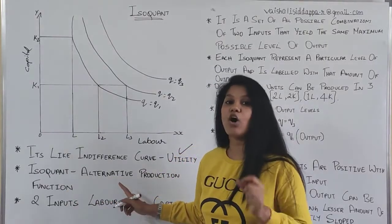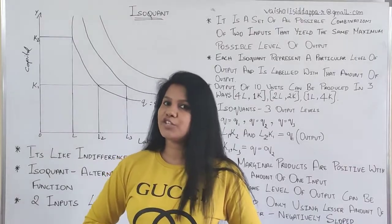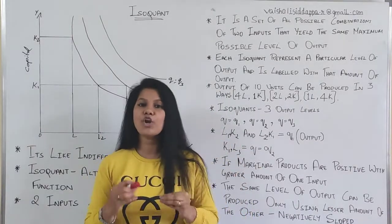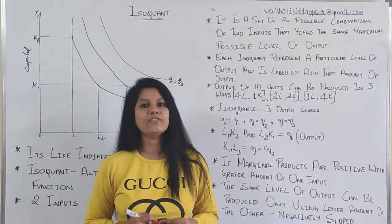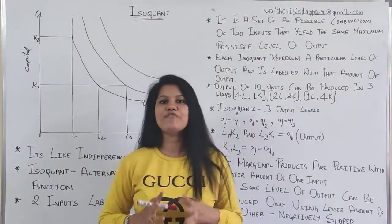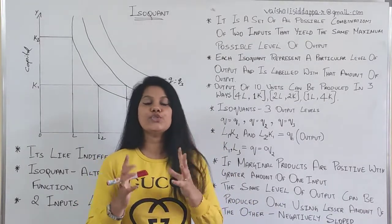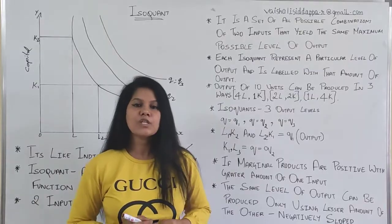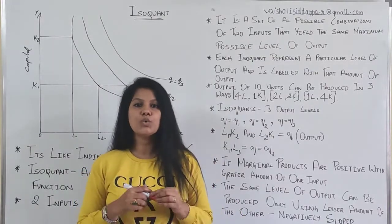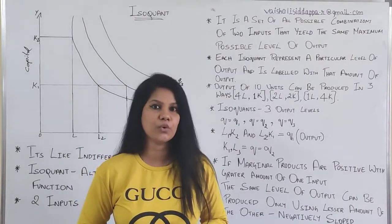Isoquant is an alternative production function. Whenever we talk about production we have so many different theories, and this is one example or otherwise an alternative theory for the production function. The production function is nothing but a technique — how you are going to use your factors of production. The factors of production mean the inputs which are really needed to produce any goods.